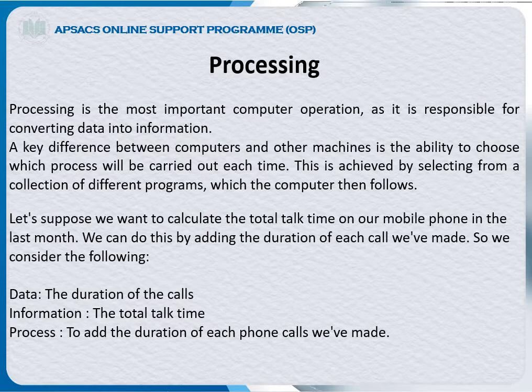Next is processing. Processing is done by the CPU. When you enter the data, the CPU processes your data and converts it into information. Processing is the most important computer operation as it is responsible for converting data into information. CPU takes data in and outputs information.